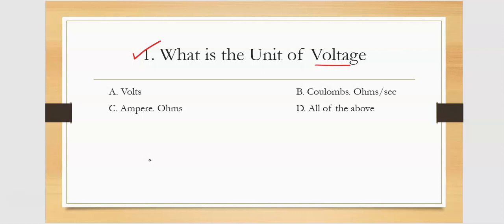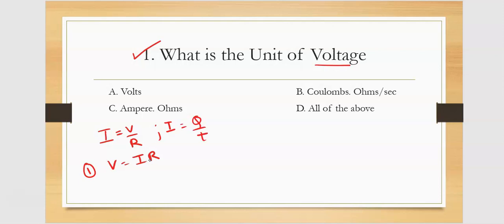Voltage formula. According to Ohm's law, we normally calculate I is equal to V by R. So if I is equal to V by R, then V is equal to I into R. Also, I is equal to Q by T — charge divided by seconds. So V is equal to Q by T, into R.